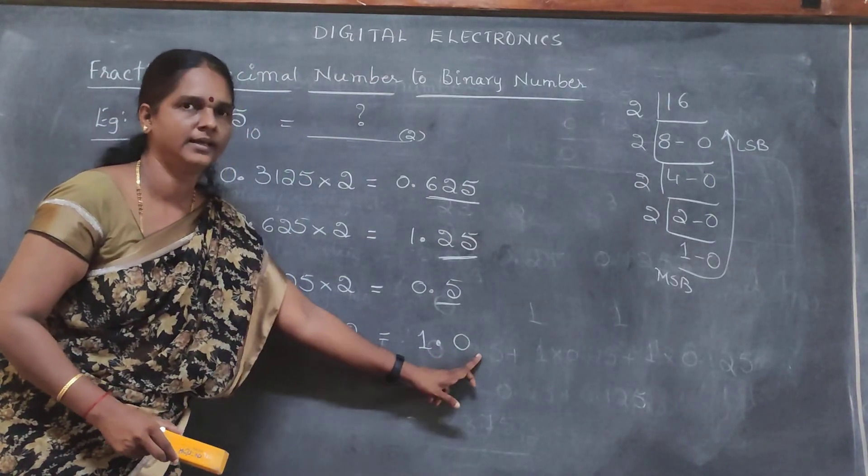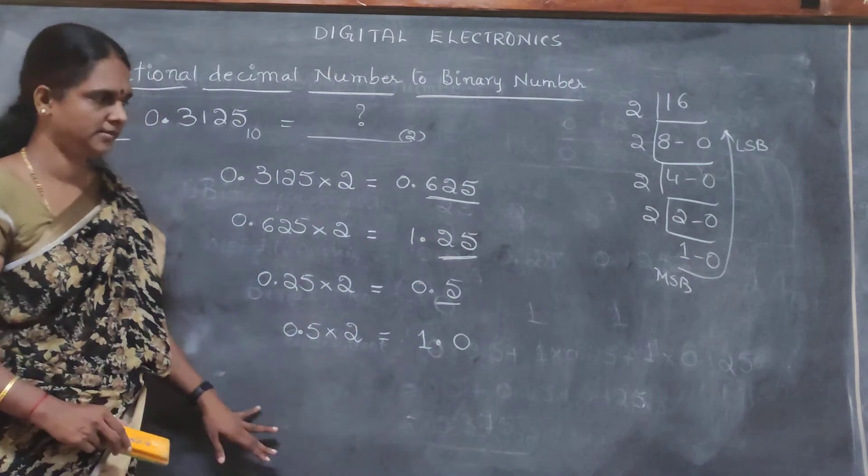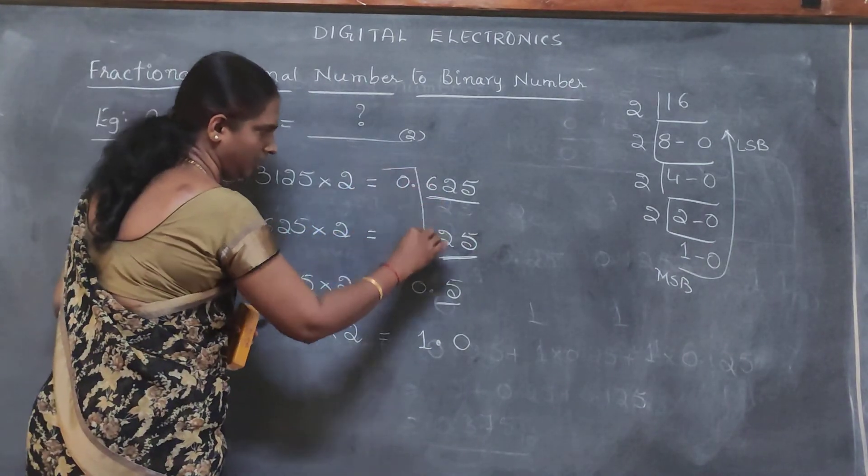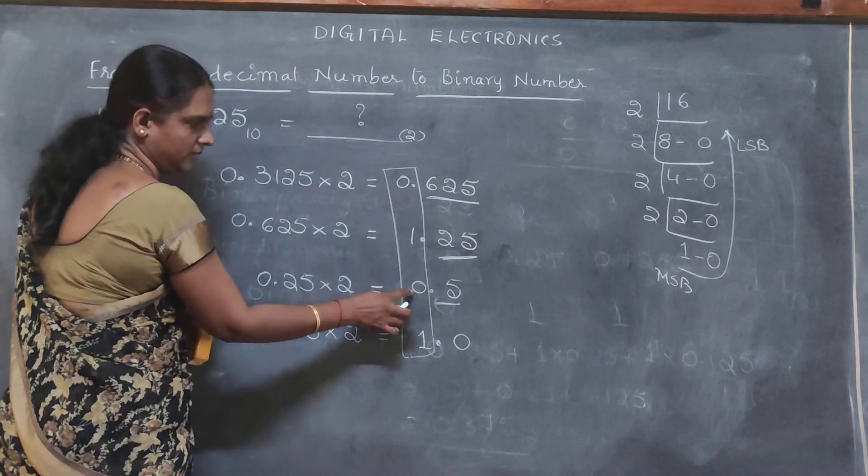Now the fraction has become 0, if you want to try to, it goes to 0 only. What we have to consider, consider only these values: 0, 1, 0, 1.